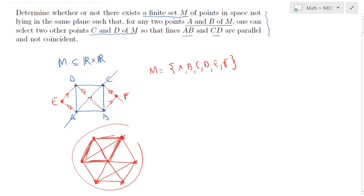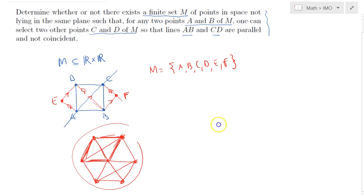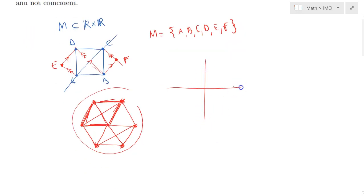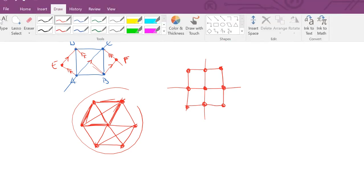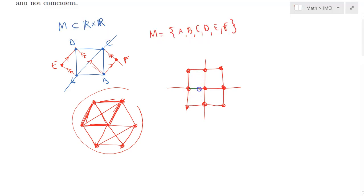I can even consider this one as well. If you take the square, you have these four points, I add the midpoints. Notice that if I draw any line, this line has a parallel. If I take this line, I have this one. If I have this diagonal, I can have this one. That picture should work too.